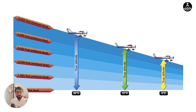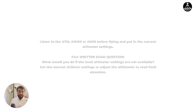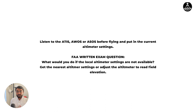The altimeter settings error precisely occurs when you fly from an area of higher pressure to an area of lower pressure or the other way around. This also occurs when you fly from higher temperature to lower temperature or lower temperature to higher temperature. So how can we avoid this error? First of all, if you're flying out of an airport, put in the correct altimeter settings, make sure you write it down, and verify that you have put in the correct altimeter settings.